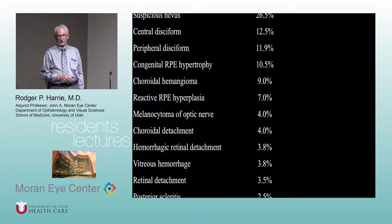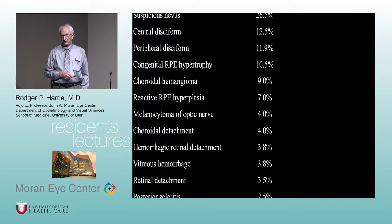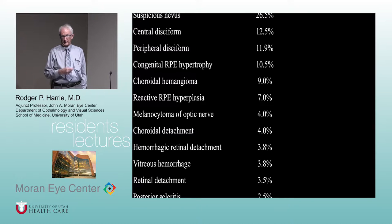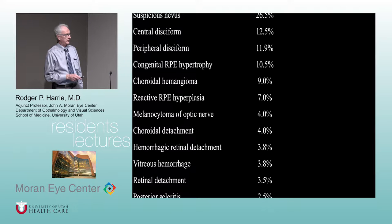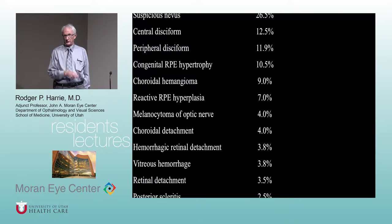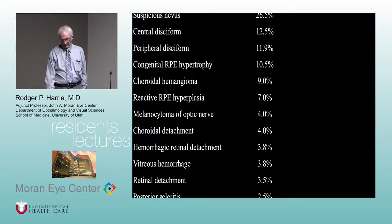These are things that were misdiagnosed as melanomas, and we knew this because these eyes were taken out. In those days, enucleation was pretty much standard of care. The misdiagnosed conditions included suspicious nevi - number one, just over a fourth - central and peripheral disciform lesions, RPE hypertrophy, hemangiomas, reactive RPE hyperplasia, melanocytomas, choroidal detachment, hemorrhagic retinal detachment, vitreous hemorrhage, retinoschisis, and posterior scleritis were all things misdiagnosed as melanomas. Those were eyes taken out for those conditions.